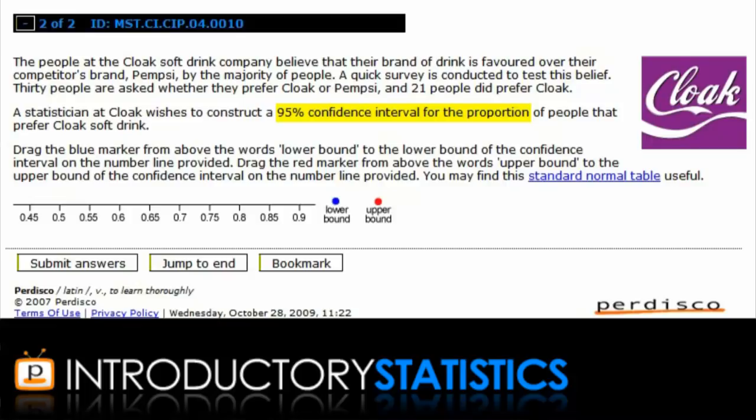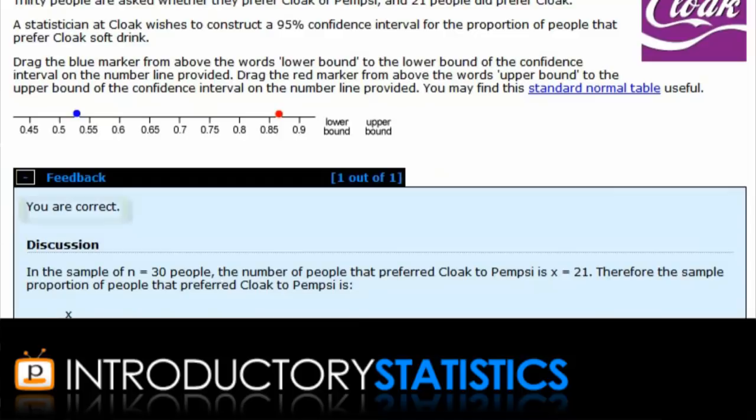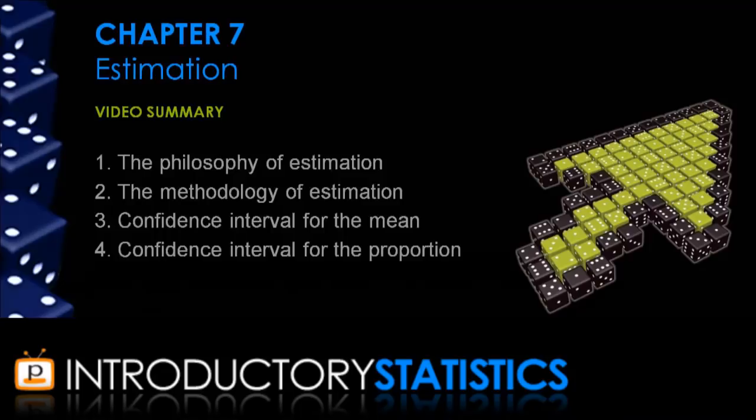They want to construct a 95% confidence interval for the population proportion. You can answer this question by dragging the two colored dots onto the number line to indicate the lower and upper bounds of the interval. I'll do that now. And we see we get feedback for our answer and a detailed explanation of how to do the question.